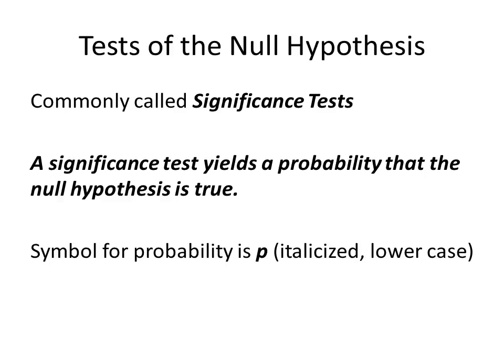A significance test yields a probability that the null hypothesis is true. The symbol for probability is lower case p, italicized. When you write this for homework, make sure that your symbol for probability p is italicized. Follow that and you will not miss the answer for the homework.